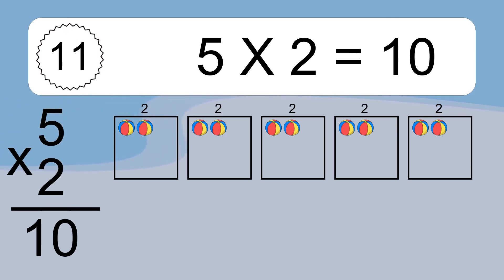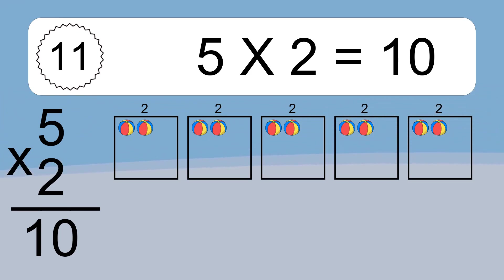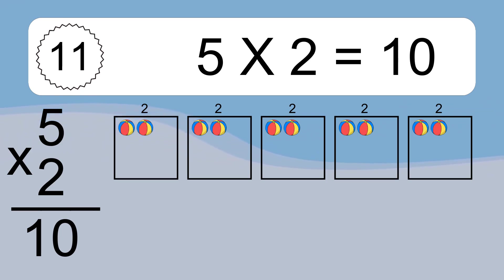We have 5 boxes, and each box has 2 colorful balls inside. If you count all the balls in all the boxes together, you will have 5 times 2 balls. This equals 10 balls.